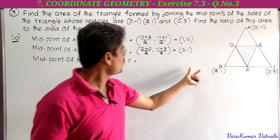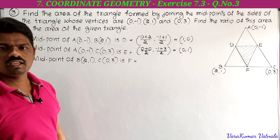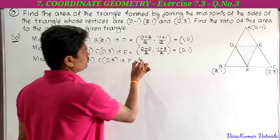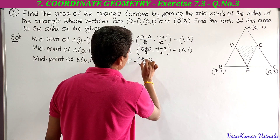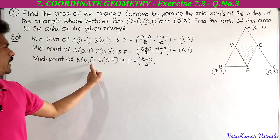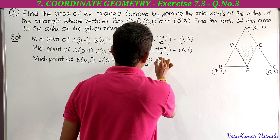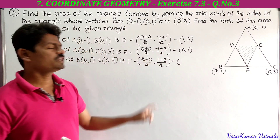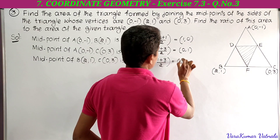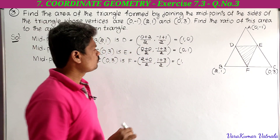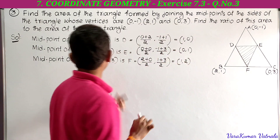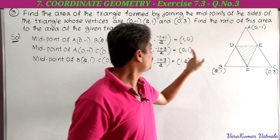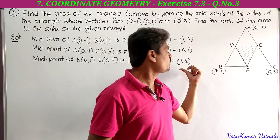The midpoint F of BC, where B is (2, 1) and C is (0, 3): x-coordinate is (2 + 0)/2 = 2/2 = 1, and y-coordinate is (1 + 3)/2 = 4/2 = 2. So F is (1, 2). Now the vertices of triangle DEF are D(1, 0), E(0, 1), and F(1, 2).